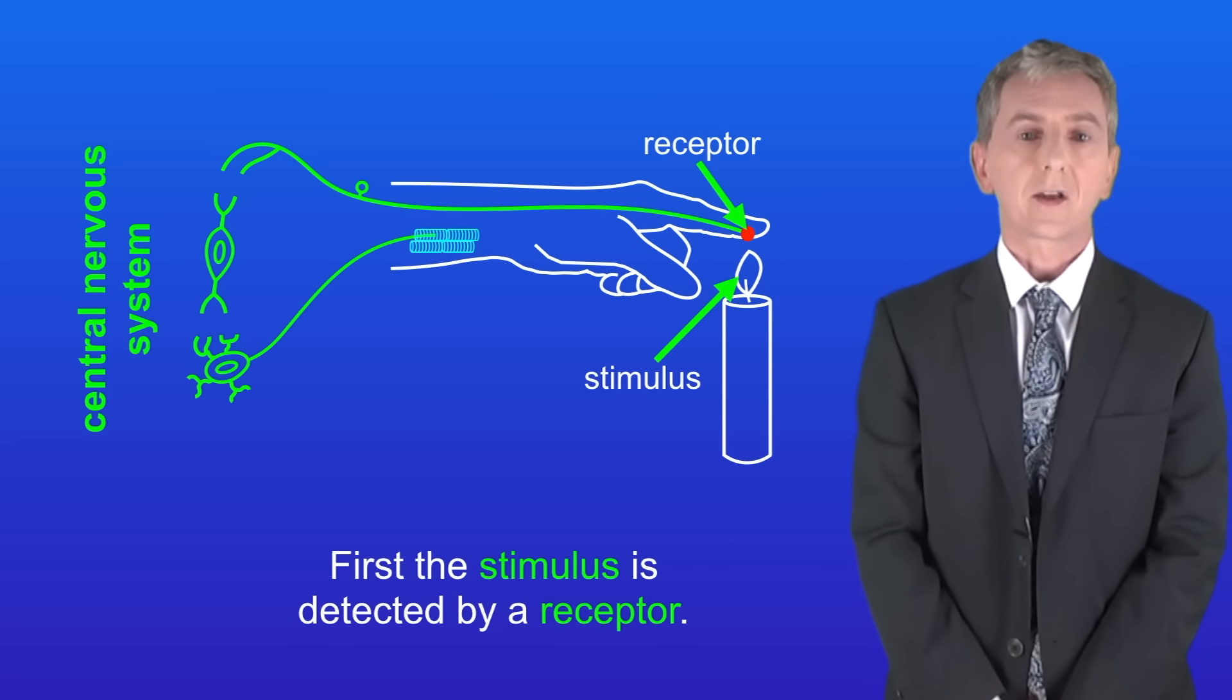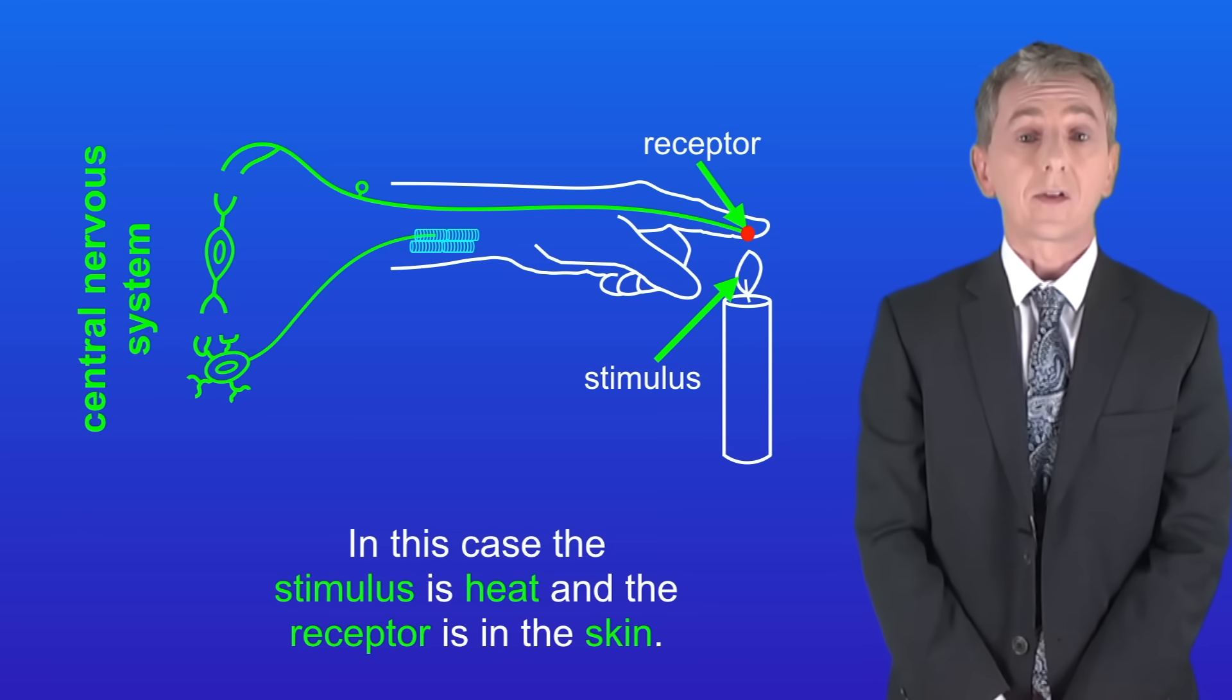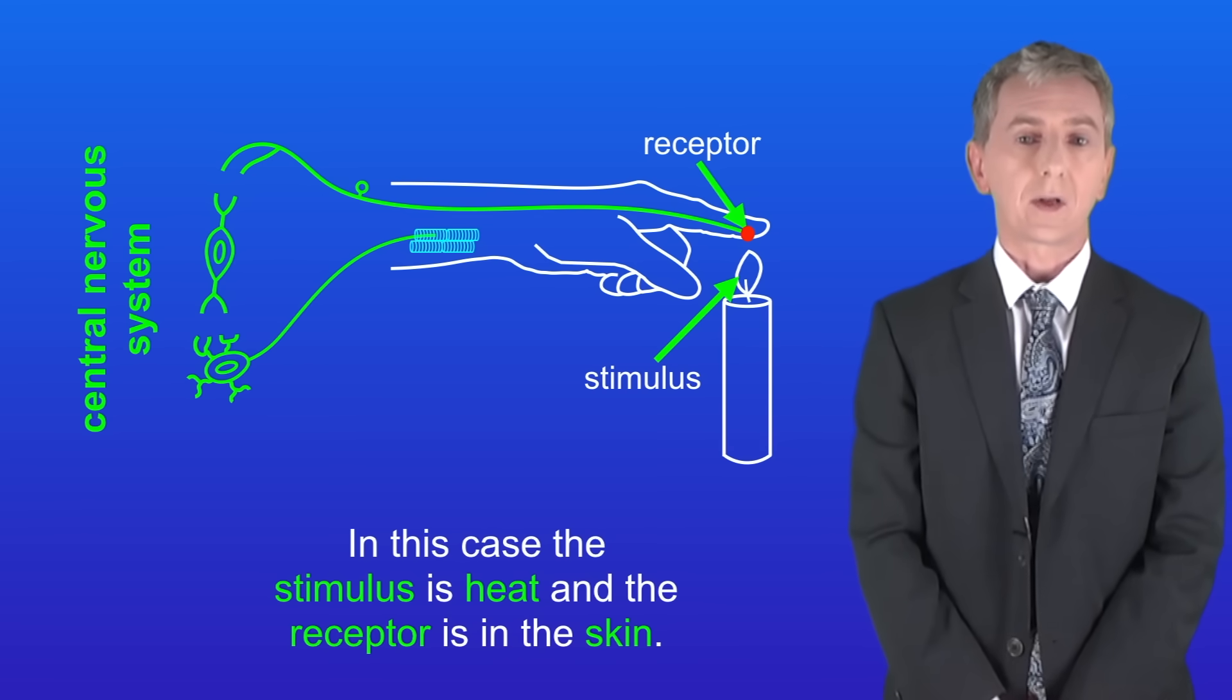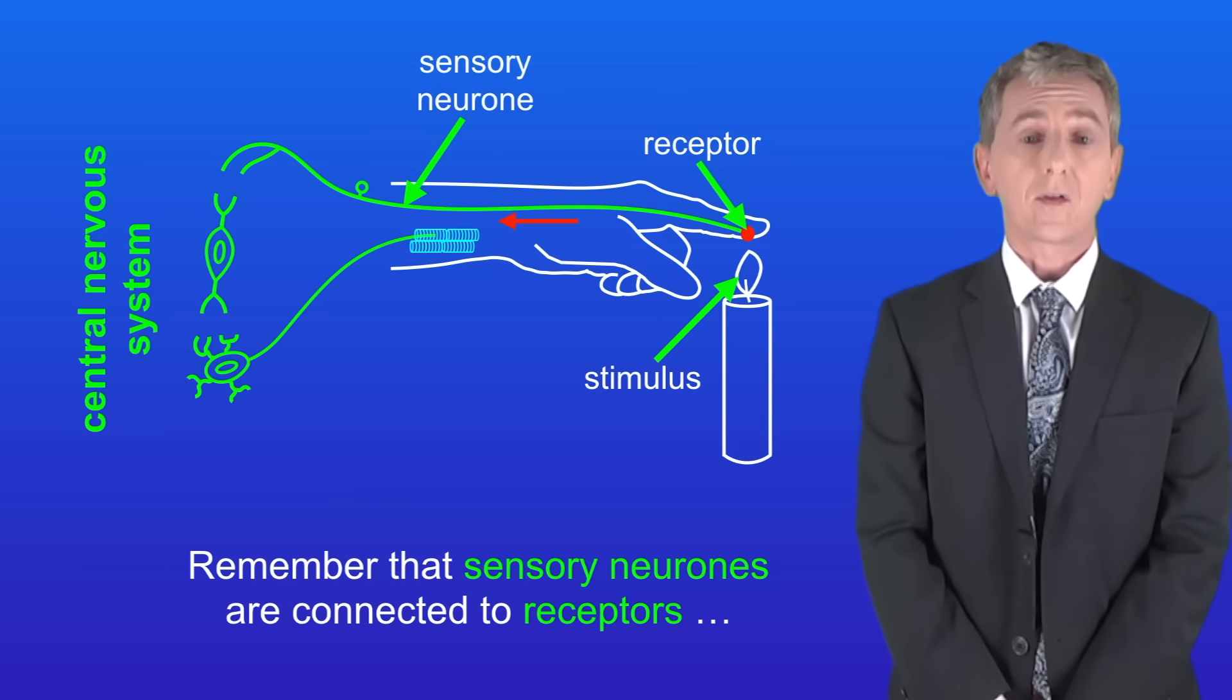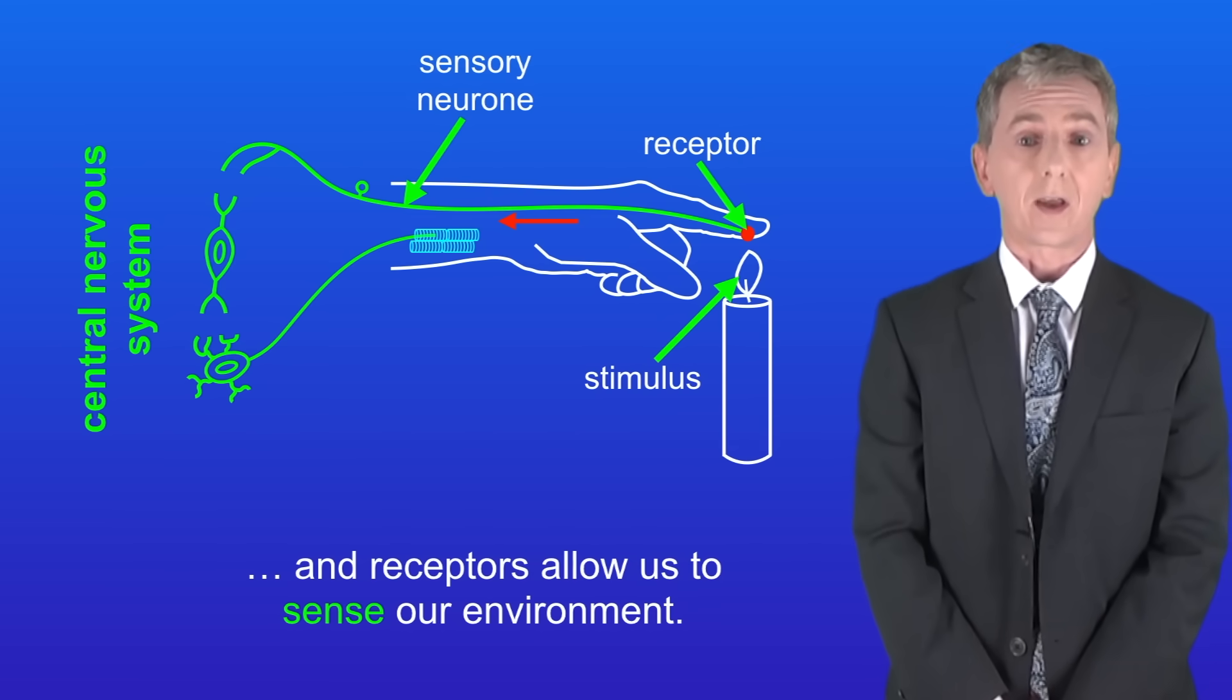First the stimulus is detected by a receptor and in this case the stimulus is heat and the receptors in the skin. Electrical impulses now pass from the receptor along a sensory neuron to the central nervous system. Remember that sensory neurons are connected to receptors and receptors allow us to sense our environment.